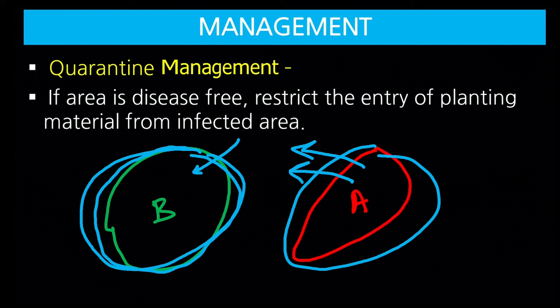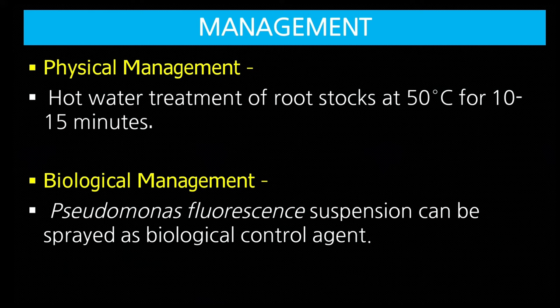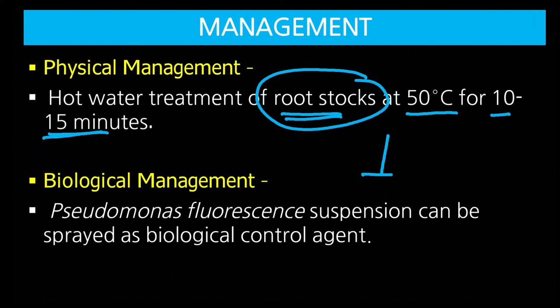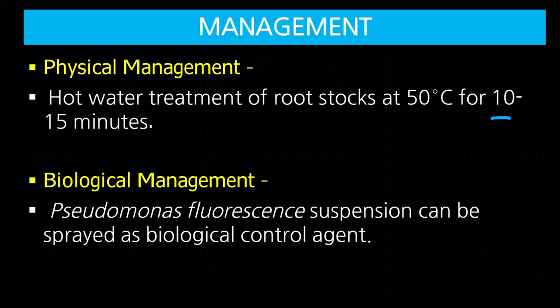Physical management: hot water treatment of root stocks at 50 degree centigrade for 10 to 15 minutes. When grafting, the lower portion from which roots develop is called root stock, and the upper portion which gives good fruit and yield is called scion. The root stock should be kept in hot water at 50 degrees centigrade for 10 to 15 minutes, which kills the bacteria present inside.